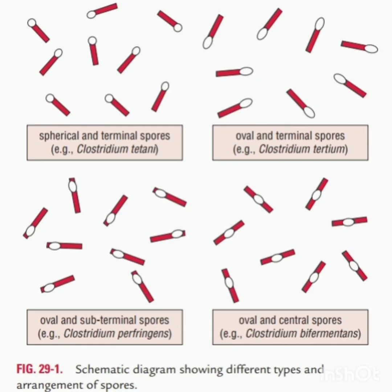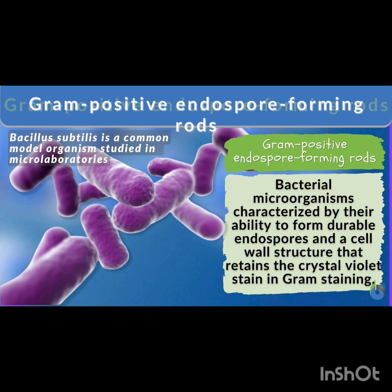Bacterial spores can have different arrangements as shown in the image. Bacterial spores can be oval or spherical in shape. They can be arranged either terminally, subterminally, or centrally on the bacteria. The most common spore-forming bacteria are Clostridium tetani, Clostridium perfringens, Bacillus subtilis, and Bacillus anthracis.